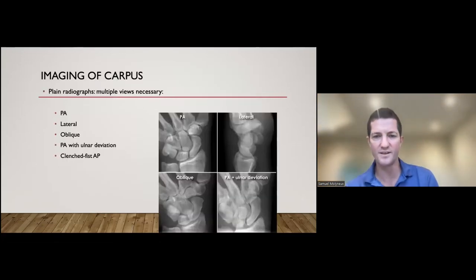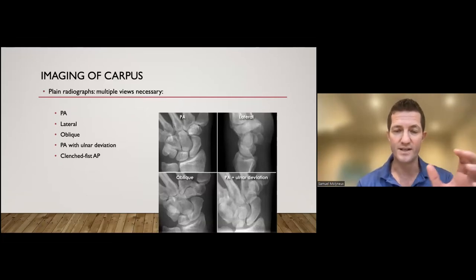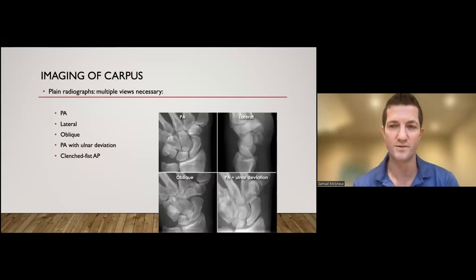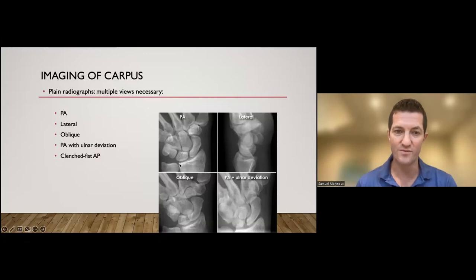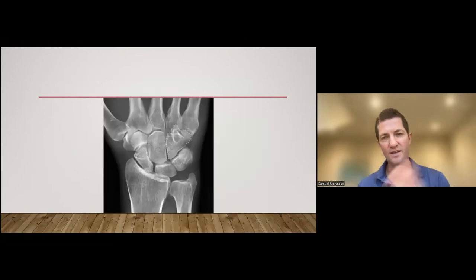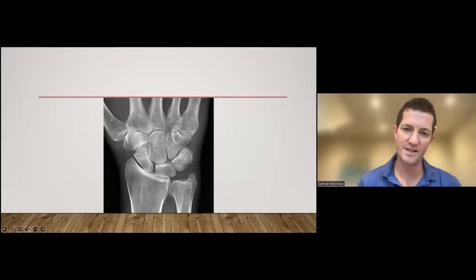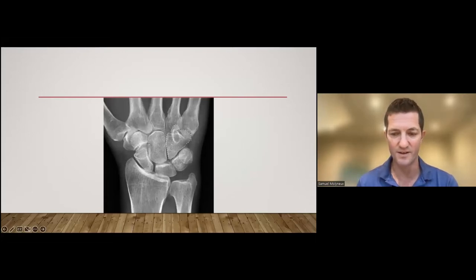When we're getting imaging of the carpus, it's really difficult to see scaphoid fractures. Everyone knows that. We get lots of different views so that we can see the scaphoid at different angles and see whether or not the scaphoid is broken. The other thing that we're looking at is non-scaphoid injuries around the wrist. What we're looking for is whether there's any disruption of Gilula's arcs. A clenched fist view puts force into the capitate, driving it between the lunate and the scaphoid and can widen that gap if there's any instability between the scaphoid and the lunate.